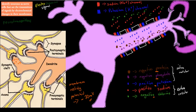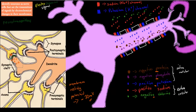An impulse comes down the axon terminals from one neuron. Once the impulse gets all the way to the bottom, neurotransmitters are released. These neurotransmitters are actual chemicals that activate the dendrites of the other neuron — they come down and attach to the dendrite of the next neuron. That releases positively charged particles, which become the electrical impulse. So we've now gone from the chemical to the electrical impulse.